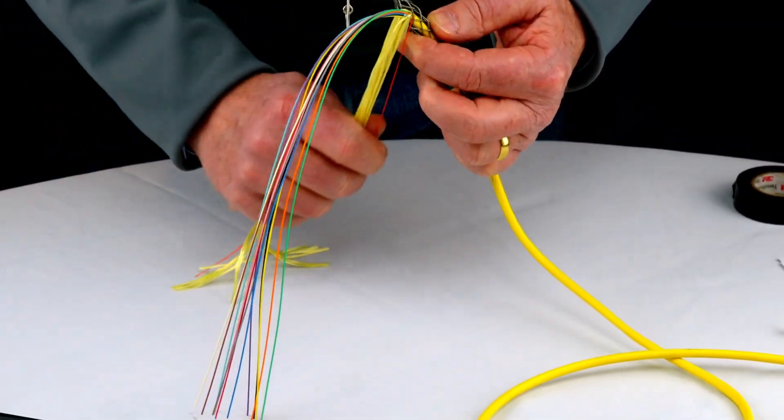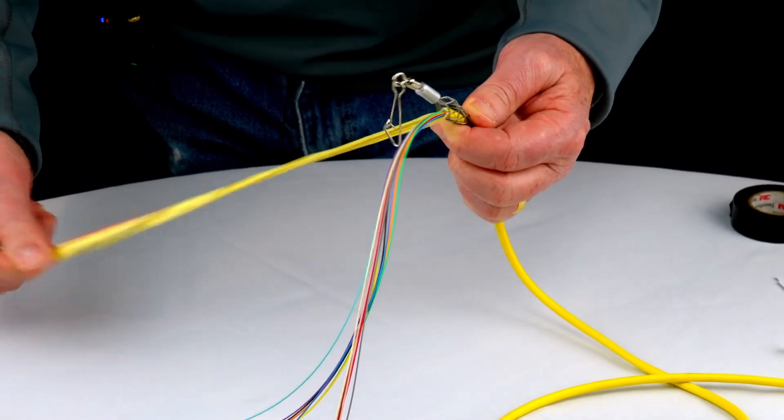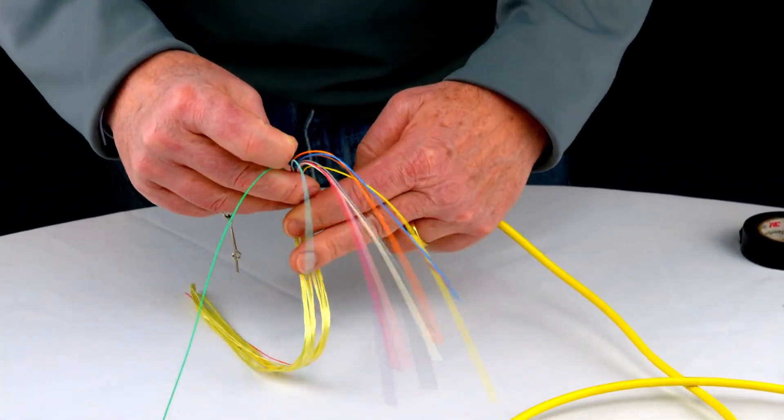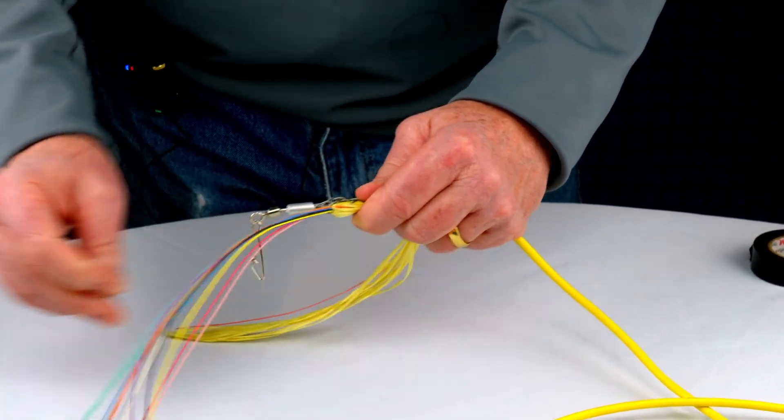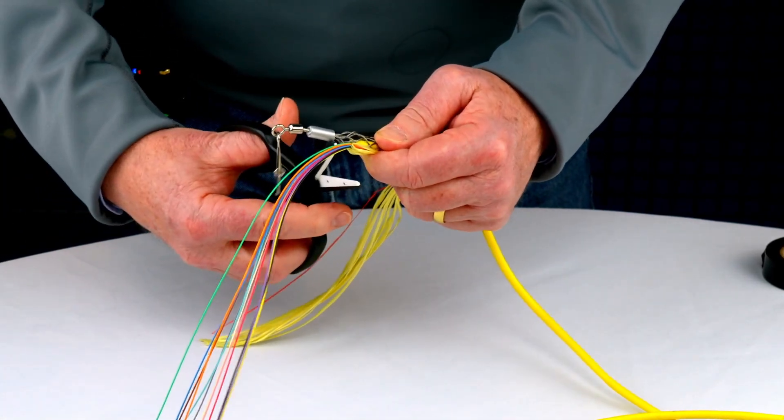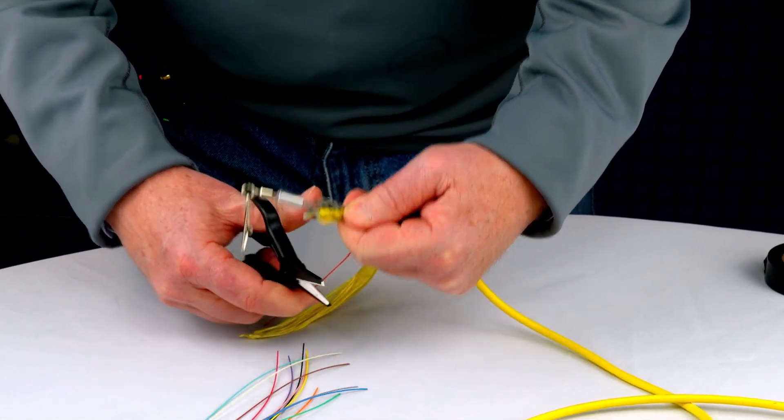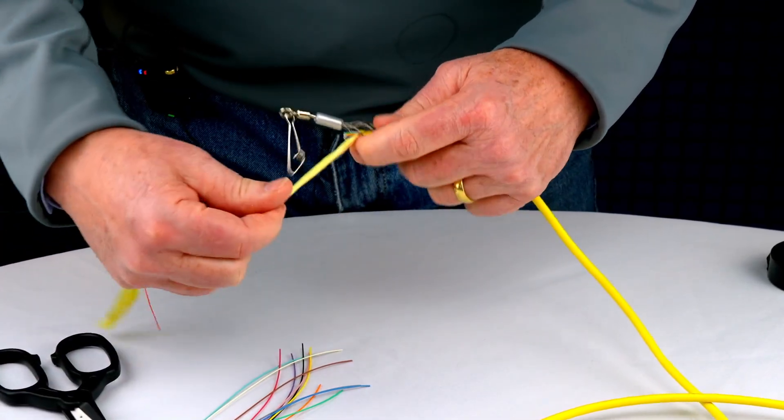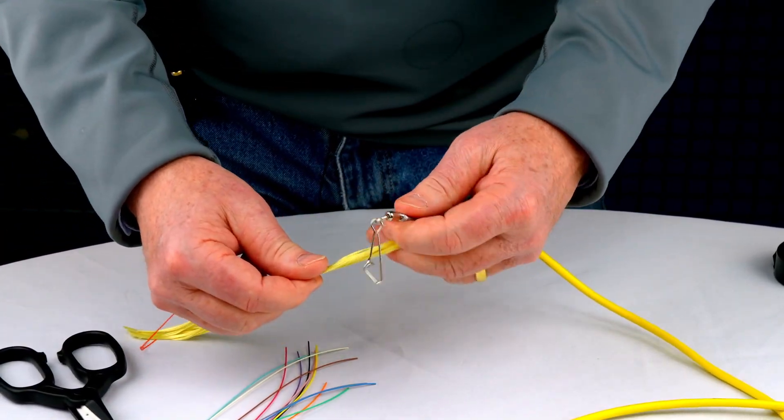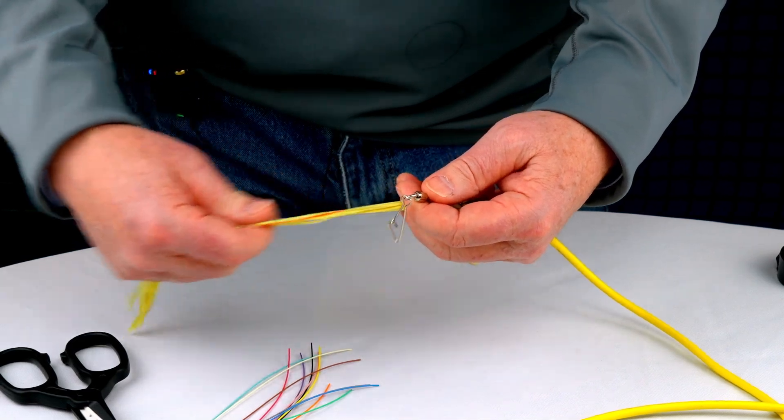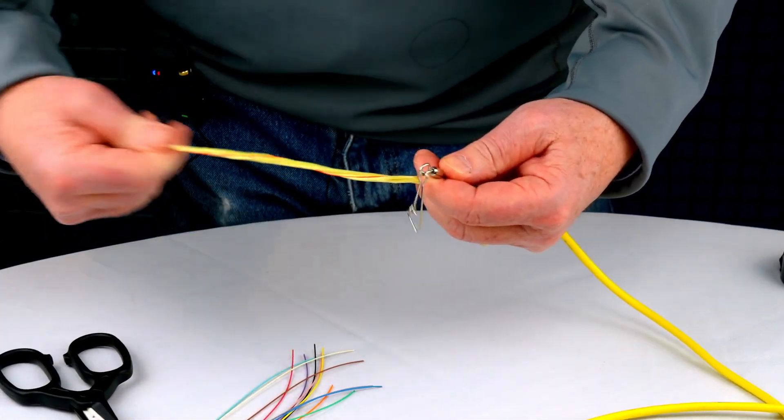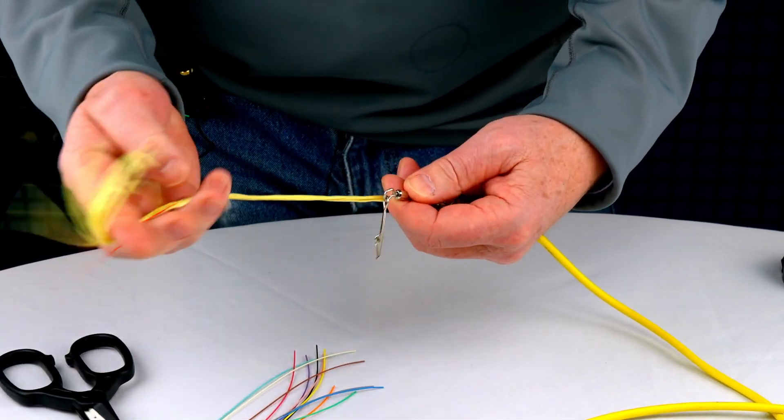Separate the aramid yarn—people used to call this Kevlar—from the individual strands. We don't need these strands anymore, so I'm just going to snip them off. You could theoretically leave them on too, but they might get in the way. Snip that, get that strand out of the way, and then wind your strands up here.